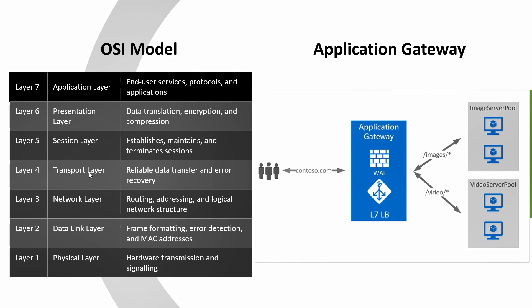If we check the diagram on the right side, this shows how host path-based routing works in Application Gateway. For traffic hitting the Application Gateway, it checks the URI path. If it finds 'images' in the URI path, it routes the traffic towards the image server pool. If it finds 'video' in the URI path, traffic is routed towards the video server pool. In short, Application Gateway is a specialized load balancer designed for web applications, offering advanced routing and security features at the application layer.